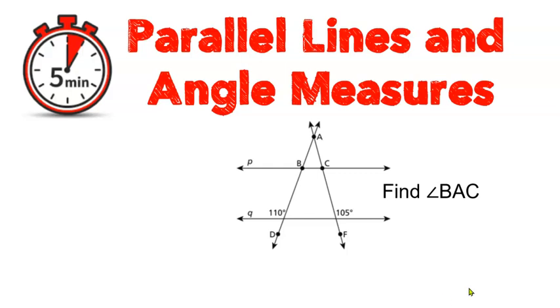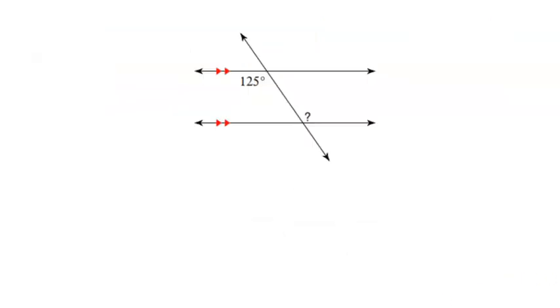Parallel lines and angle measures in five minutes. Previously, you've learned about some of the eight angles that are created when parallel lines are cut by a transversal. We learned that all of the acute angles are congruent, and that all of the obtuse angles are congruent. Now the reason why they were congruent is different, but at least we know that they're congruent.